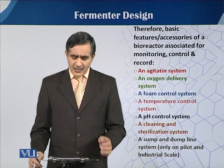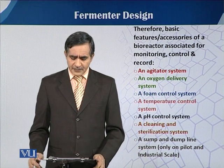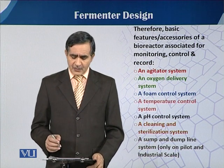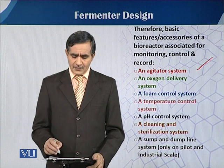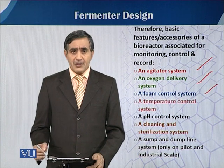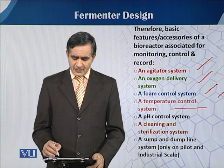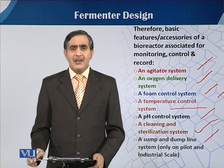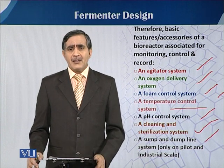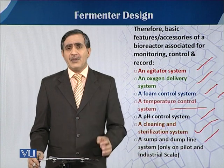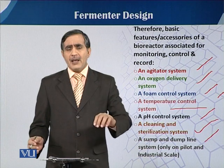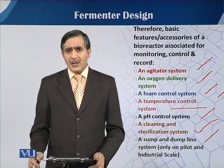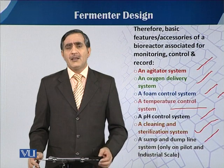As concerned with the basic features and accessories of the bioreactor for monitoring, control, and record, there are different systems required in a fermentation process: an agitation system, an oxygen delivery system, a foam control system, a temperature control system, a pH control system, a cleaning and sterilization system, and a sump and dump line from the fermenter. If the fermenter is on a large scale and industrial level, we cannot manually add something inside or harvest manually — we have a sump and dump line system associated with that fermenter.